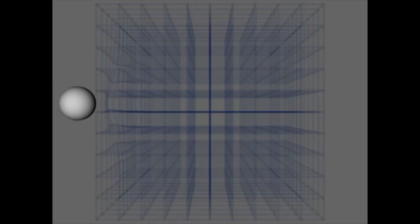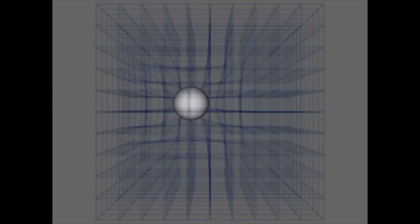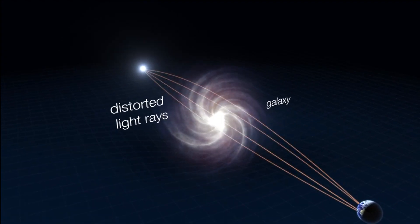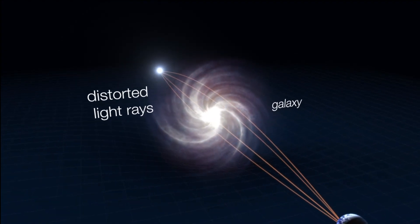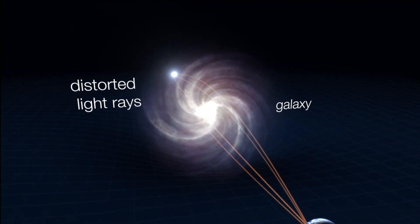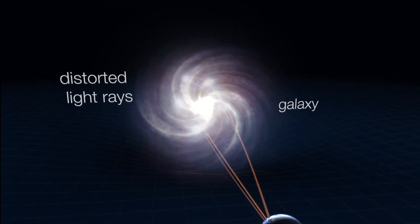Essentially, mass deforms spacetime by modifying its geometry, and spacetime affects the behavior of objects, whether massive or massless.